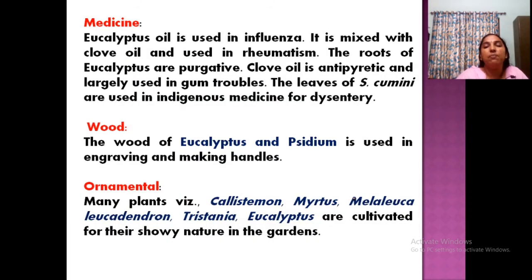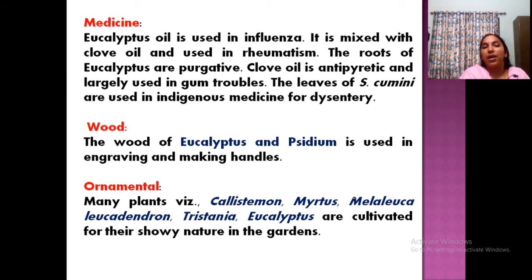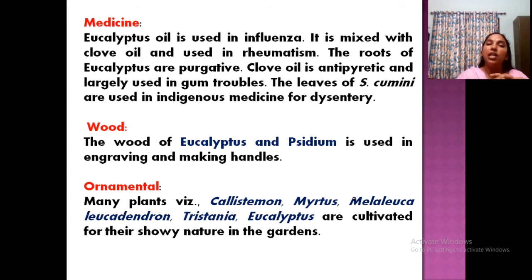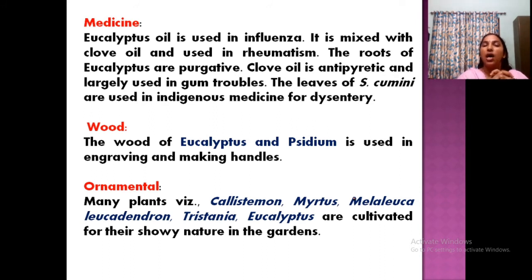Many members are highly medicinal. Eucalyptus oil is used for influenza, headache, and fever. Clove oil is very important as an antipyretic and for gum troubles, toothache. Syzygium cumini leaves are also used as medicine for dysentery. Eucalyptus wood and Syzygium wood are both highly used for commercial purposes.